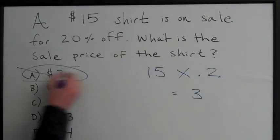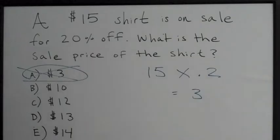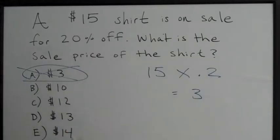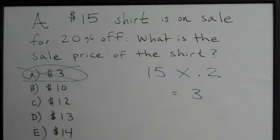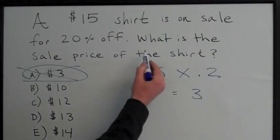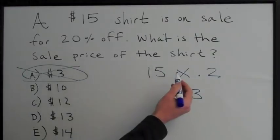However, you don't want to go with A. You don't want to go with $3. You went for the trap answer. You've got to re-read the question every time. After doing the math, go back to the question and make sure you're answering what the question is asking. They want what the sale price of the shirt is.